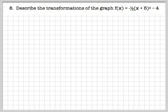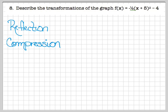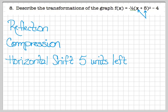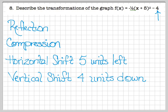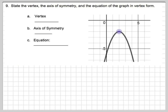Question 8 asks us to describe the transformations. Starting with the negative — that means it's a reflection. The one-half means it's a compression. The plus five means it's moved to the left five units. And the minus four means it's moved down four units.